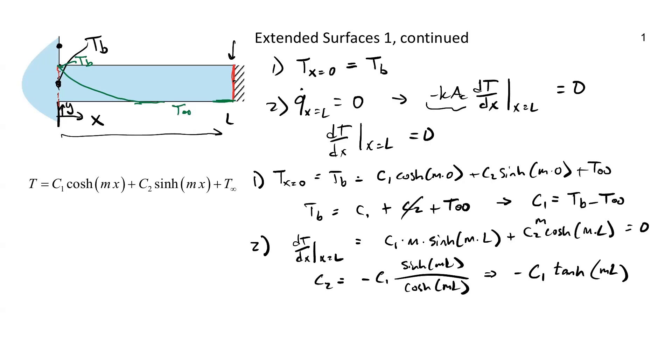Put all this together, we end up with the following. I'm going to write over on the left to give myself a little room. So T is equal to T infinity plus TB minus T infinity, that's C1, cosh of MX minus TB minus T infinity times tanh of ML times sinh of MX. So that's our full solution. This is now the temperature solution for this fin or this extended surface, given our specific boundary conditions that we're looking at. Known temperature and known heat transfer, which is zero at the boundary.